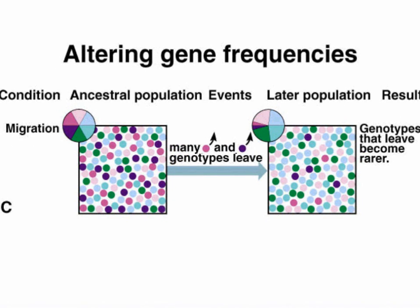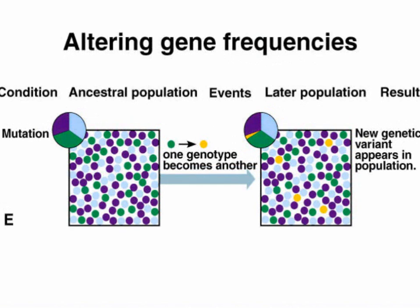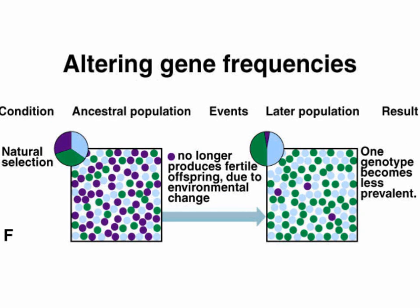On the left we see the ancestral population with an equal distribution of alleles. If the pink and purple individuals leave the population — migration — those alleles not only become rarer but the remaining alleles become more predominant. In the mutation example, some individuals' green allele becomes the yellow allele, so the green allele decreases in later populations in favor of yellow. In the natural selection example, if purple individuals no longer produce fertile offspring due to an environmental change, the purples die off and green and light blue alleles become more prevalent.